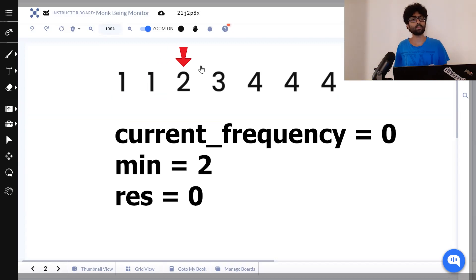2 is not equal to 3, so its frequency is simply 1. Current minus min is 1 minus 2. That's negative 1. That's not greater than result, so result remains unchanged. 1 is, however, less than our previous minimum frequency, that is 2, which is why min now becomes 1.